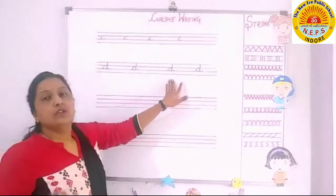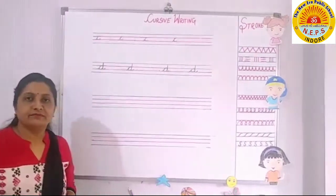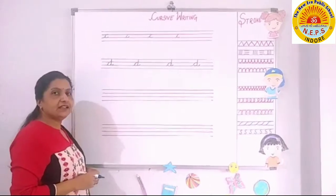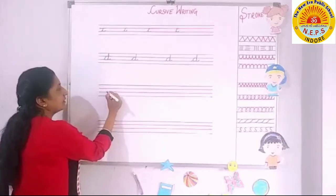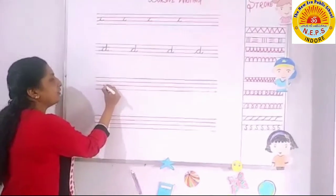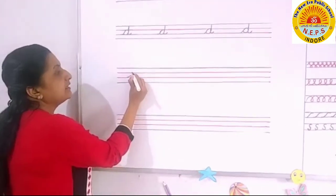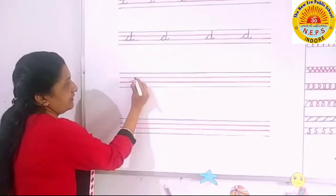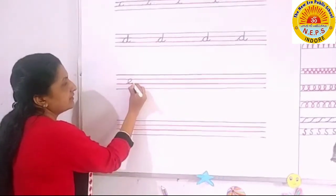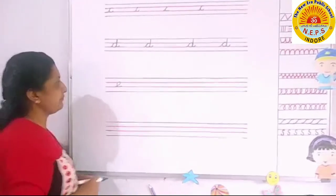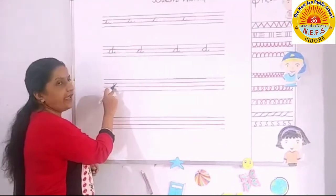So, you have to also practice D, the dog. Next letter is E — E at elephant. We start with the lower midi line to upper midi line. Make a curve, make a slanting line, then downwards. Make a curve. E — E at elephant.